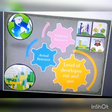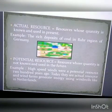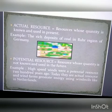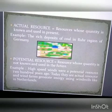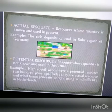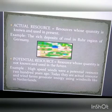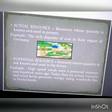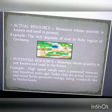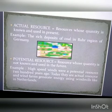What are actual resources? Actual resources are those resources whose quantity is known and are being used in the present. You can see the rich deposit of coal as an example. We know that the quantity of coal present is limited or unlimited. According to its quantity, we can call it an actual resource. Not only coal deposits but also petroleum — they are in demand, and whether the quantity increases or decreases, they are called actual resources.